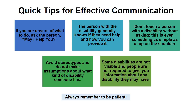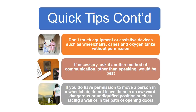Quick tips for effective communication: If you are unsure of what to do, ask the person, 'May I help you?' The person with a disability generally knows if they need help and how you can provide it. Don't touch a person with a disability without asking — even something as simple as a tap on the shoulder. Avoid stereotypes and do not make assumptions about what kind of disability someone has. Some disabilities are not visible and people are not required to give you any information about their disability. Always remember to be patient. Don't touch equipment or assistive devices such as wheelchairs, canes, or oxygen tanks without permission. If necessary, ask whether another method of communication other than speaking would work best. If you do have permission to move a person in a wheelchair, do not leave them in an awkward, dangerous, or undignified position such as facing a wall or in the path of opening doors.